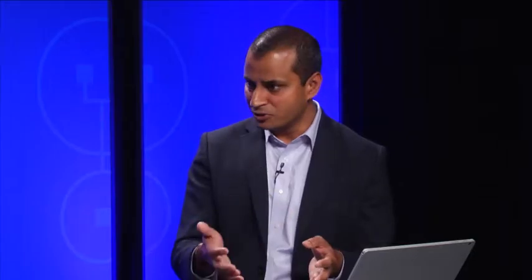However, attackers are getting very sophisticated and finding reliable ways into organizations — whether through phishing, social engineering, malware, or credential theft — and they're staying inside undetected for long periods of time. That's a big challenge for modern cybersecurity. While attackers don't succeed with every email they send, they are reliably able to get in, persist, and move around. They may have a few failures, but that has really diminished the effectiveness of the network perimeter. Of course, you still need a firewall, because without it all the old attacks come back.